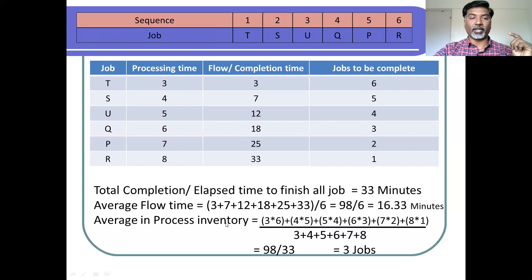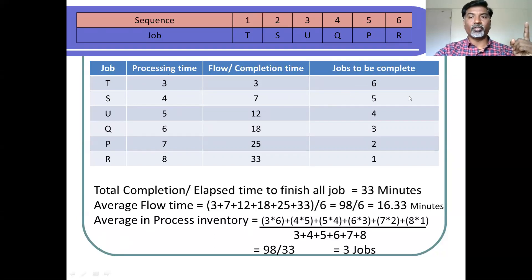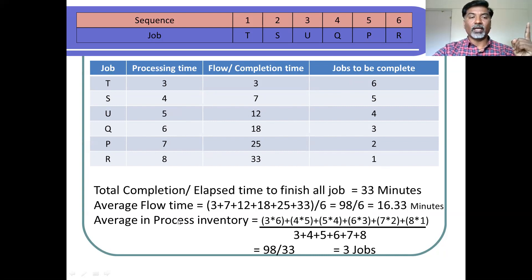Average jobs in-process inventory is calculated by multiplying processing time by jobs to be completed, summed across all jobs, then divided by the total processing time. That is: (3×6) + (4×5) + (5×4) + (6×3) + (7×2) + (8×1), all divided by 3+4+5+6+7+8. Solving this expression gives an average jobs in-process inventory equal to 3 jobs. In this fashion, you can solve a job sequencing problem for n jobs on one machine using the SPT method.